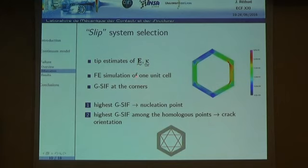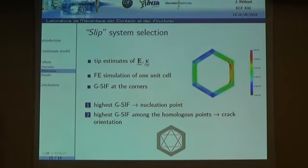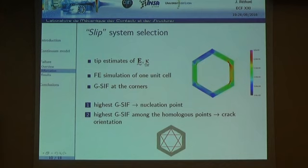I will focus on how we transfer the crack tip estimates of strain and gradient of strain to the unit cell, and how from these quantities we decide which slip system is activated. We need robust estimates of these quantities that are local yet also non-local, since we want to measure them at the scale of the unit cell, which is not infinitely small.